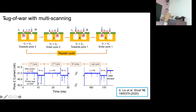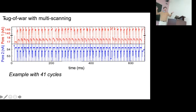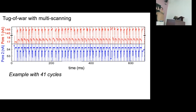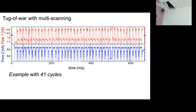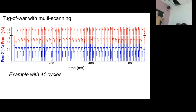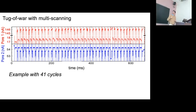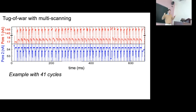With multi-scanning you might wonder how many scans you can generate. Using this approach we've gotten hundreds — this is about 40 shown on the slide. There's a disengagement probability of about 10 percent per scan, leading to Poisson statistics in the number of scans achievable. We can imagine approaches that might reduce this disengagement.